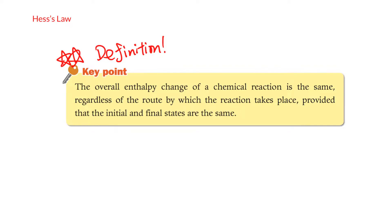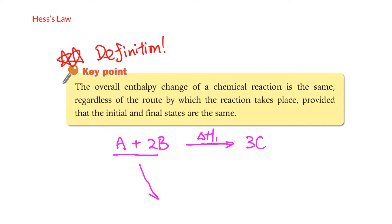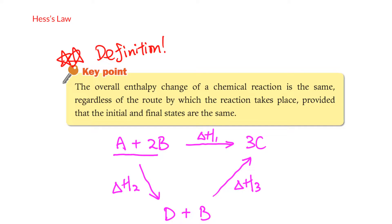Consider a reaction like A + 2B → 3C. That is one route with ΔH₁. There could be another route where A + B forms intermediate D, leaving one B behind, and then D + B gives 3C, with enthalpies ΔH₂ and ΔH₃. According to Hess's Law, as long as the initial and final states are the same, ΔH₁ = ΔH₂ + ΔH₃.